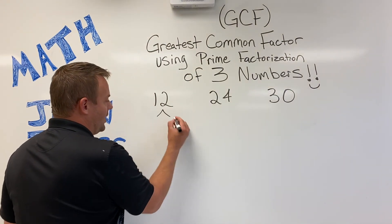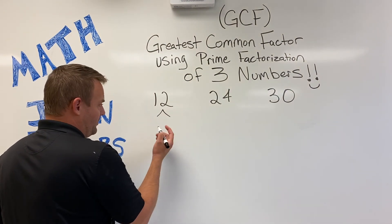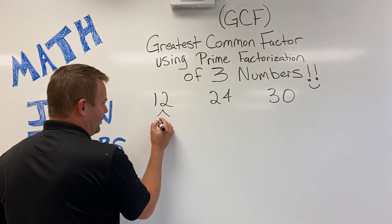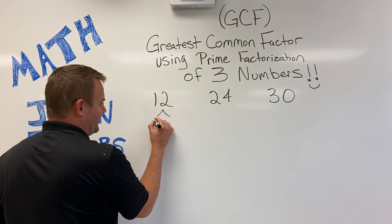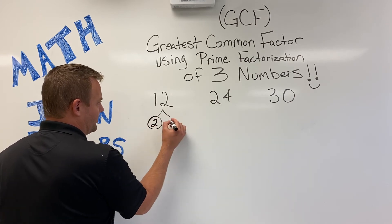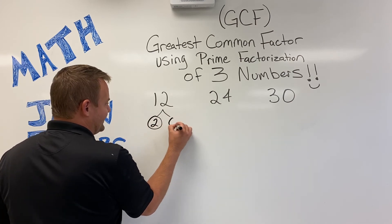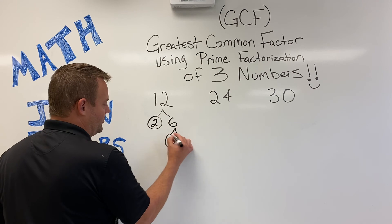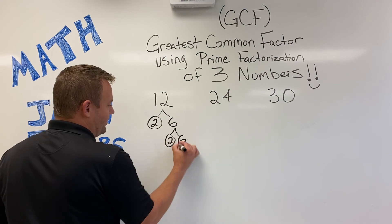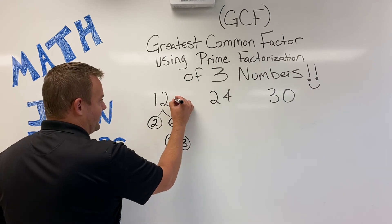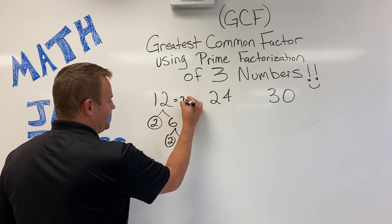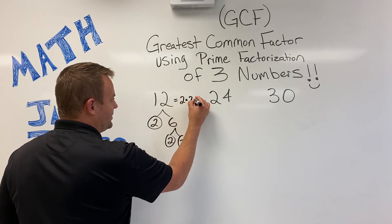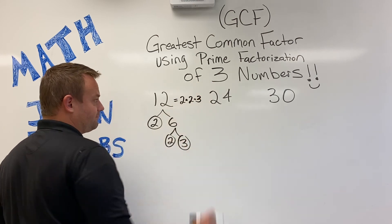So 12 — prime factorization of 12. 12 can factor out into two. Two is prime, so I'll circle it. And six — six factors out into two and three. So the prime factorization of 12 is two times two times three.